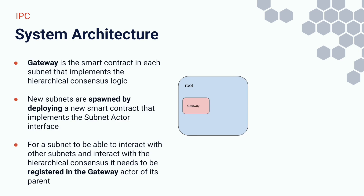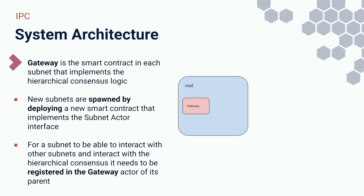From a smart contracts perspective, there are two contracts. The gateway smart contract is the same for each subnet and implements the hierarchical logic and enforces security policy — it cannot be changed by subnet users. New subnets are spawned by deploying a new smart contract that implements the subnet actor interface, but that implementation is performed by the users of the subnet, so those implementations are not controlled by the protocol team and could potentially have vulnerabilities.